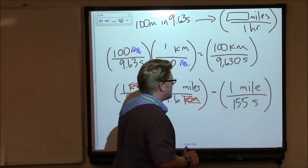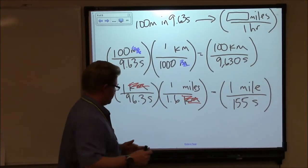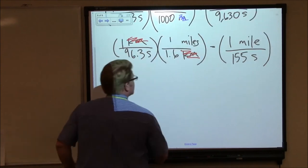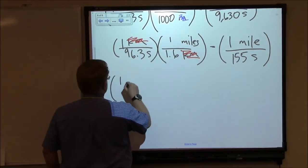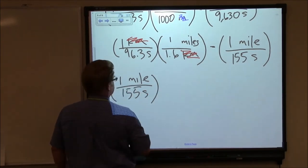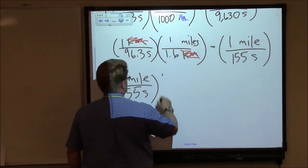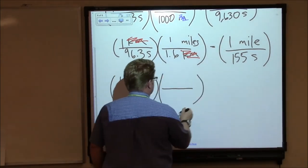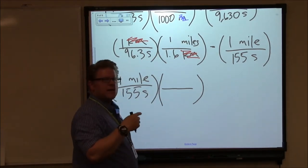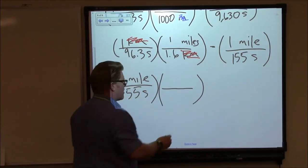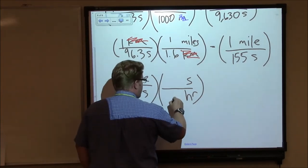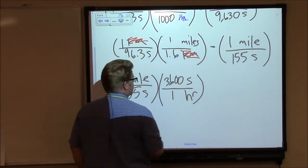So in 155 seconds, he would run one mile. That's pretty fast, but I want miles per hour. I don't want miles per second. So let's see what we can do about that. Let's rewrite 1 mile, 155 seconds, and I've got some relationship between seconds and the hours that I want. I want to get rid of seconds, and I want to end up with miles per hour. So I put hours on the bottom, and I'm going to put seconds on top. In one hour, there are 3,600 seconds.